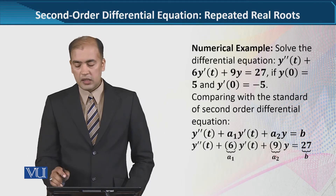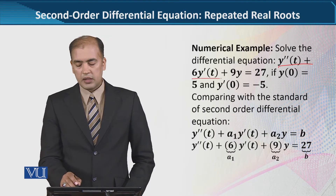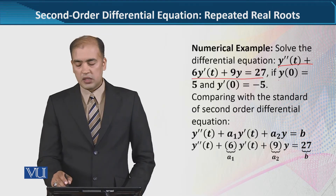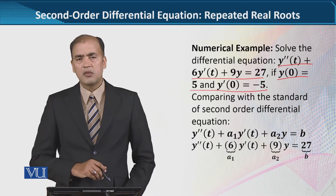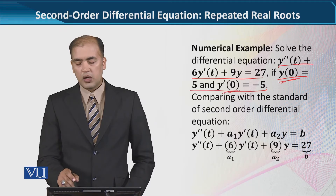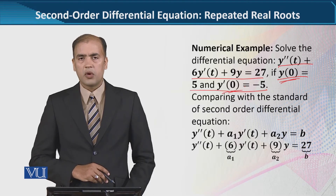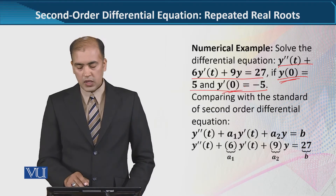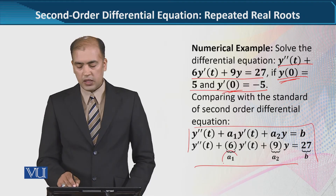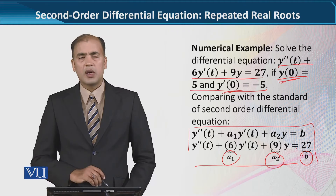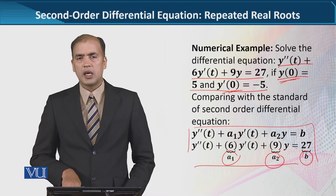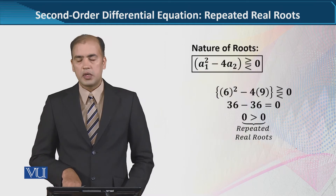We can now do the numerical example: y double prime... this is the whole second-order differential equation جسے ہم حل کرنے جا رہے ہیں، along with its given initial conditions جو کہ دو ہیں - ایک y(0) کی form میں اور ایک y'(0) کی form میں۔ یہ وہی step ہے جس میں ہم a1، a2، اور b کی values نکالتے ہیں - so you can pause the video and see those values.